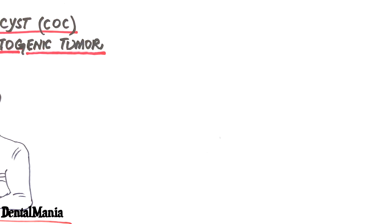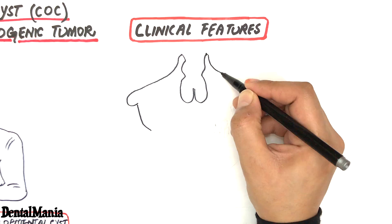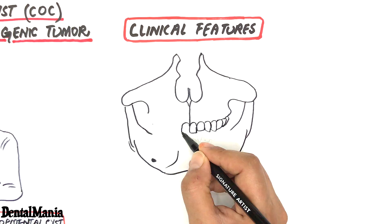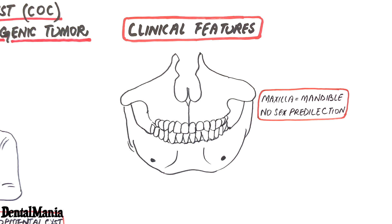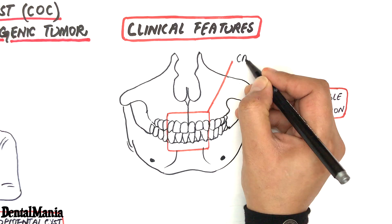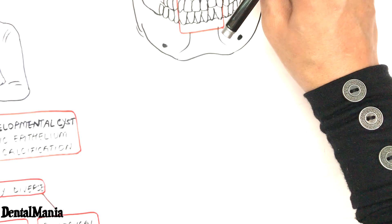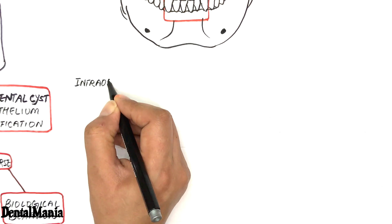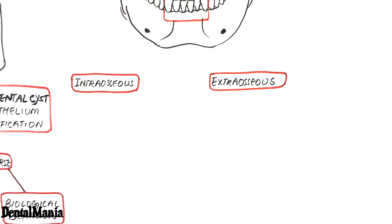Regarding clinical features, the cyst appears with equal frequencies in the maxilla and mandible, with no sex predilection, and about 65% of cases are found in the incisor and canine region of the jaws.